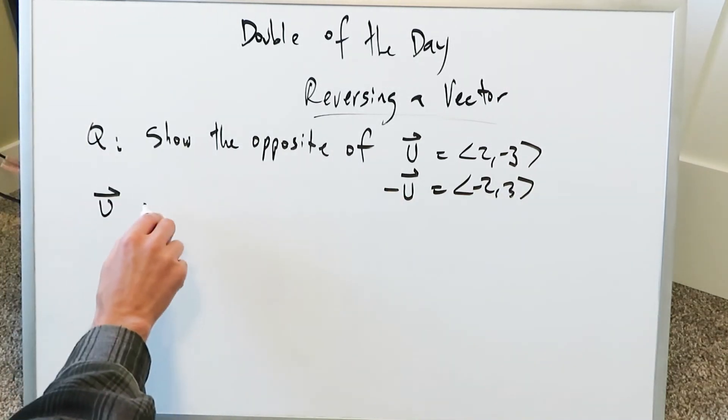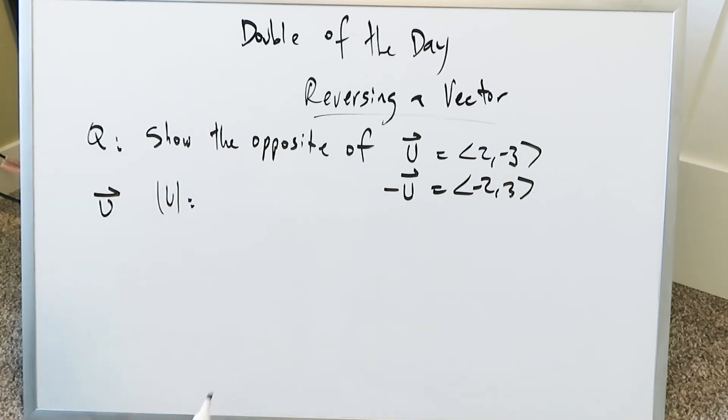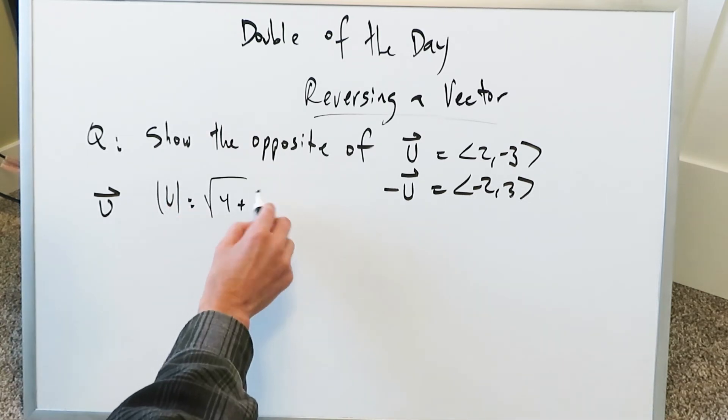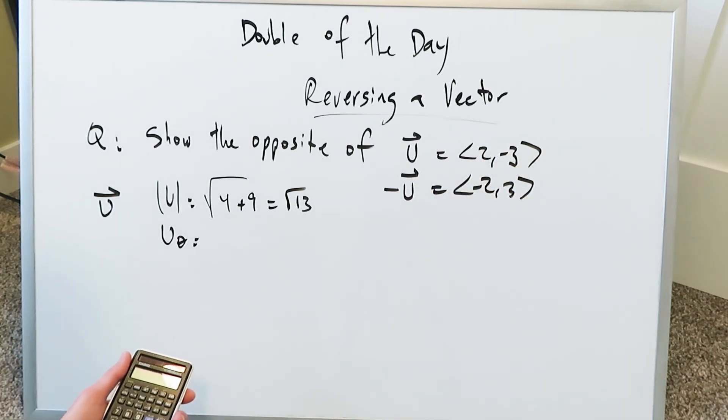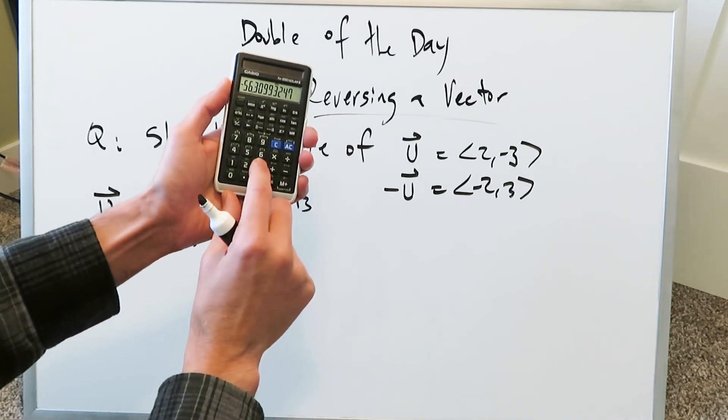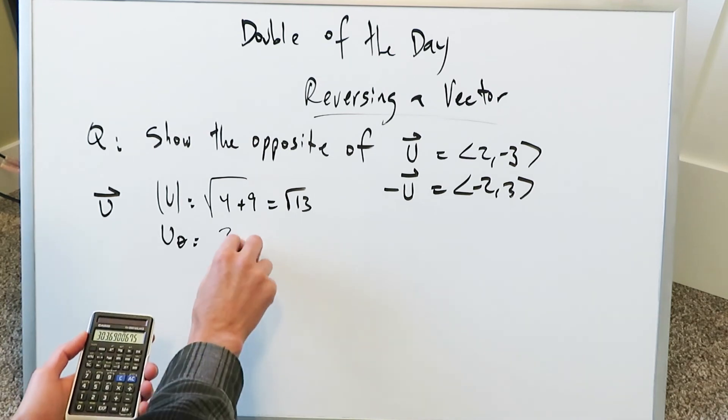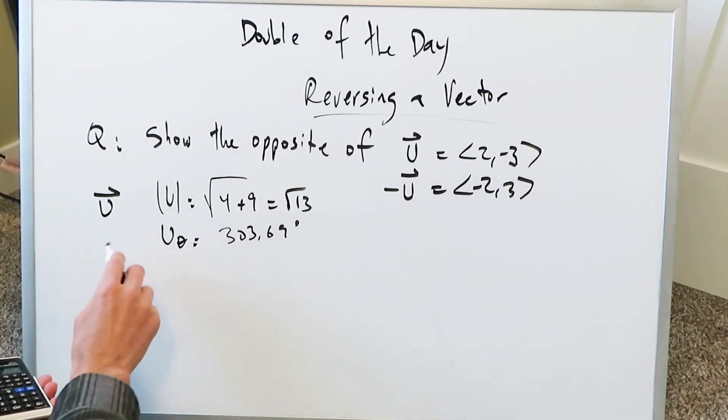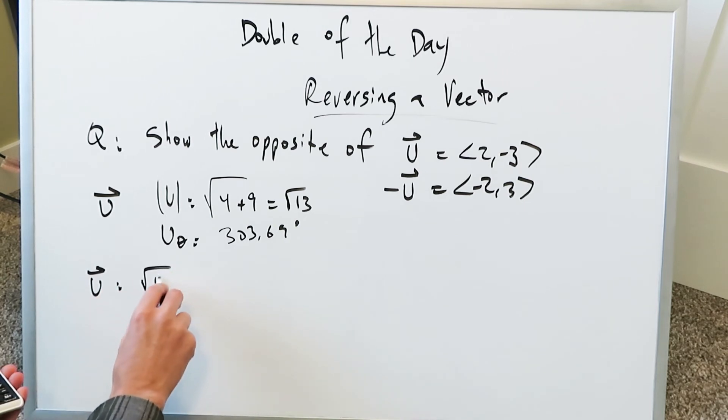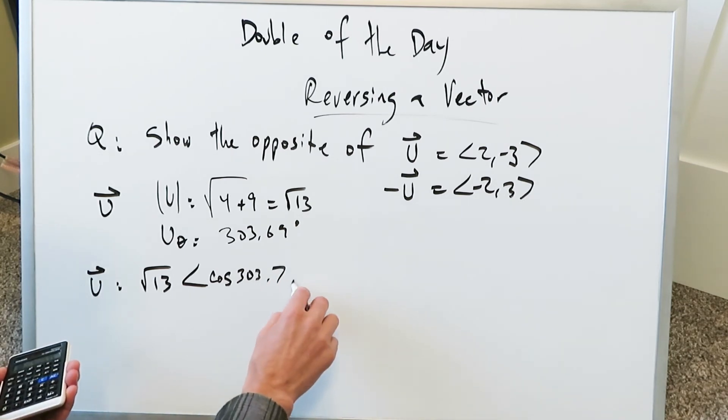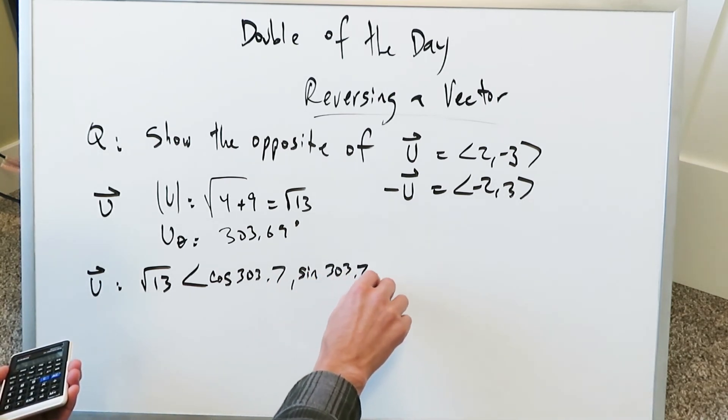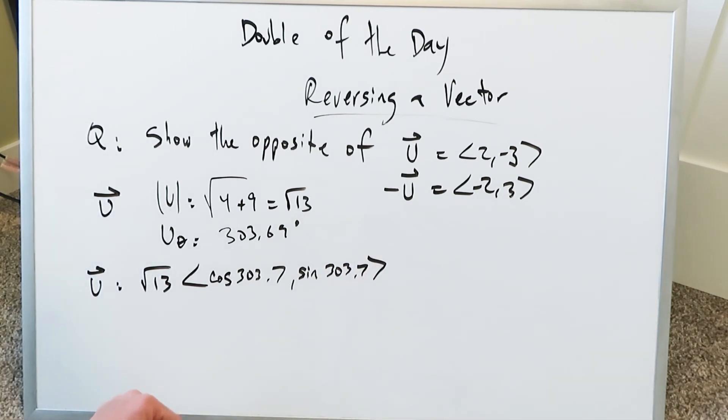The opposite of vector u is (-2, 3). Look at the vector u and determine its magnitude. The magnitude of u is 2² which is 4 plus (-3)² which is 9, and you're getting √13. Find its angle. You have (2, -3) is a fourth quadrant angle. You'll do -3 divided by 2, inverse tan it, you get -56.3°. Add this to 360, you get 303.69°. You can represent this vector u as magnitude √13 with cos 303.7° and sin 303.7°.